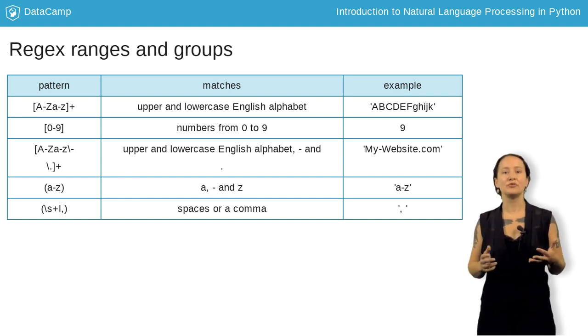On the other hand, with groups which are designated by the parentheses, we can only match what we explicitly define in the group. So A hyphen Z match only A, a hyphen, and Z. Groups are useful when you want to find an explicit set of characters, such as the final example, where we're taking spaces or commas.